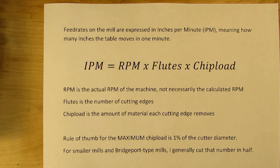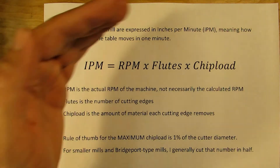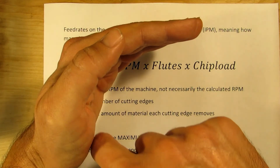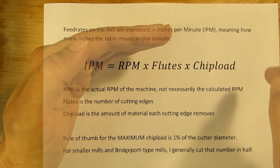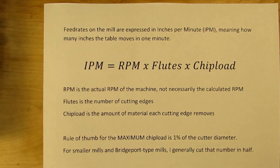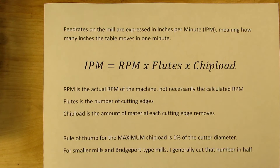The chip load is the amount of material that each cutting edge removes. As you go through the cut, your end mill peels off a chip — however many thousandths of an inch thick you want that chip to be is your chip load. The rule of thumb for maximum chip load on any machine is 1% of your cutter diameter.